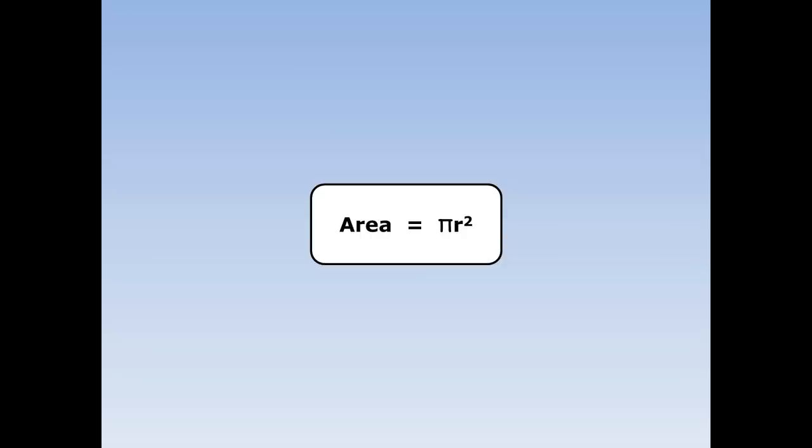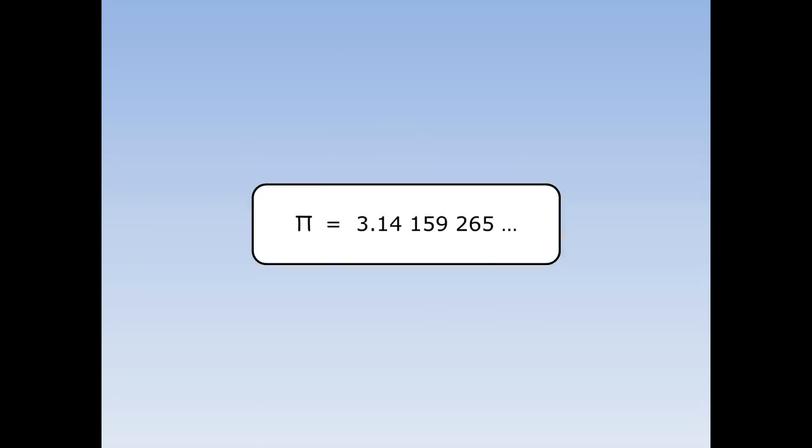The area of a circle is pi r squared, where r is the radius. Pi equals 3.14159265, and in fact pi keeps on going forever. We're going to round pi off to 3.14.